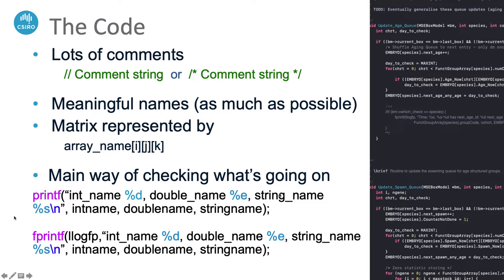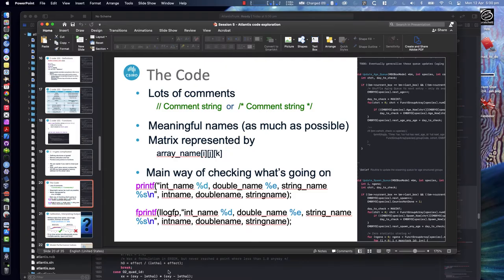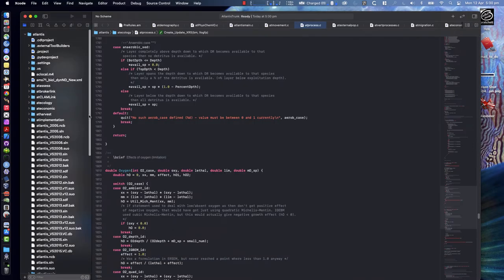Inside a print statement you first explain what you want to print — the name or string — then tell it what format the thing is: integer, double or float, or string. Then you give it the actual name of the thing you're really printing, so you might say the human-readable name and then the Atlantis code name for the same thing. We'll show what that means in the actual code — so now we'll stop the PowerPoint for a second and go have a look in the code, then when we come back we'll look at some calibration examples.